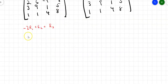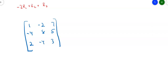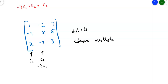Let's look at one more example. Suppose the matrix is [1, -2, 7; -4, 8, 5; 2, -4, 3]. If I look at column 1 and column 2, everything in column 2 is -2 times column 1: -2 times 1, -2 times -4, -2 times 2. The columns are multiples of each other, so the determinant equals 0. If one row is a multiple of another, or one column is a multiple of another, you'll end up with a determinant of 0.